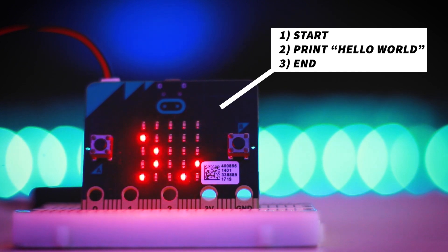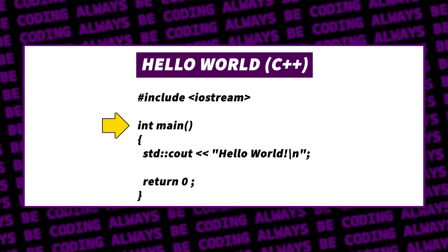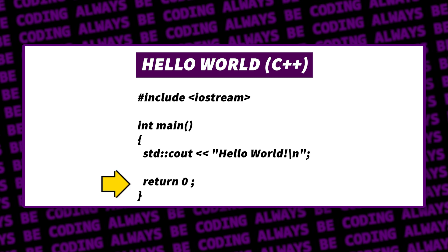Hello world is usually everyone's first program and it can be broken down to three parts: the program starts, it prints hello world, and then it ends. This concept of following instructions one line at a time holds true for simple programs like hello world, and also for more advanced things like data structures, algorithms, or even operating systems.